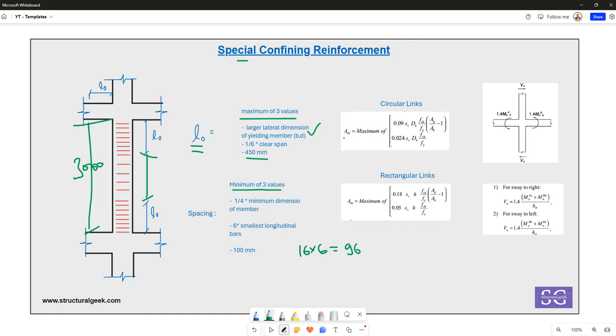Further, IS 13920 code also imposes what should be the minimum area of a particular single link. For a circular column, it gives you Ash, which is the maximum of these two values. Most of the parameters are familiar: FCK is the characteristic strength of the concrete.